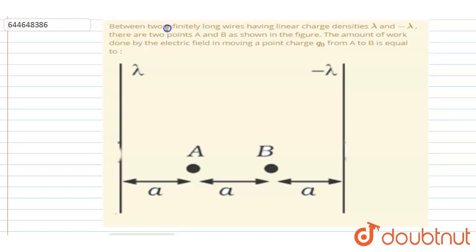Hello everyone. Between two infinitely long wires having linear charge density lambda and minus lambda, there are two points A and B as shown in the figure. The amount of work done by electric field in moving a point charge Q naught from A to B equal to.